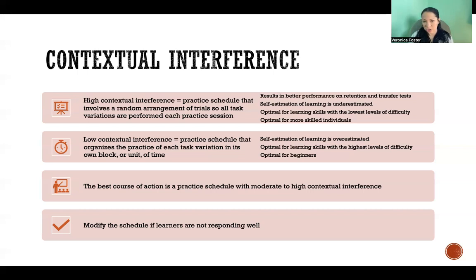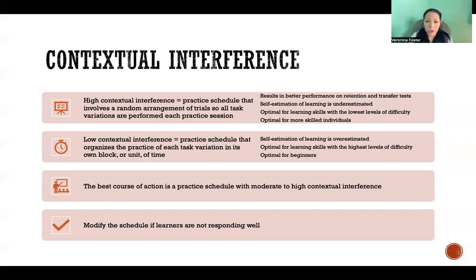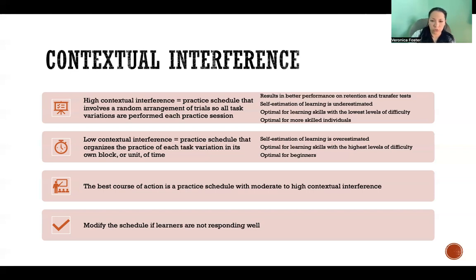The best course of action for most people and most types of skills is a practice schedule with moderate to high contextual interference. You can always modify and adapt that schedule depending on how learners respond. If it's too stressful, they're losing confidence, or they're not learning as well as expected, you can add more low contextual interference sessions — more block scheduling — so they can dig deep on specific skills until they feel more confident, then return to a high contextual interference schedule.